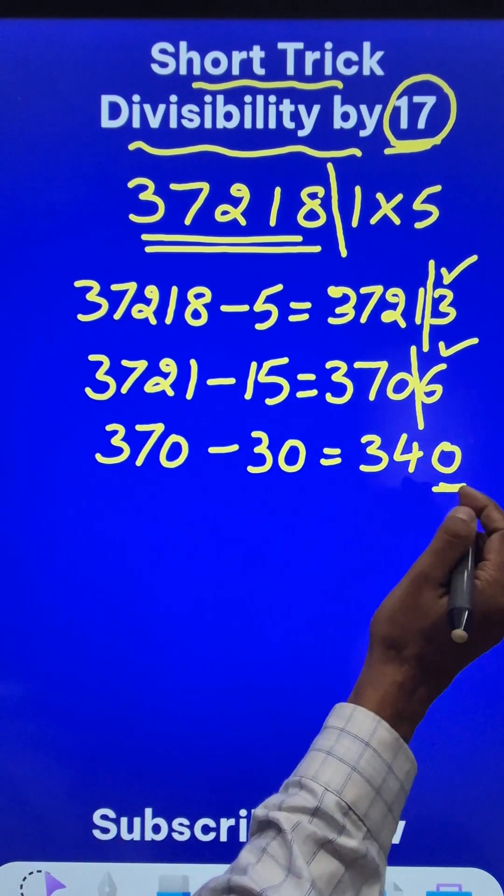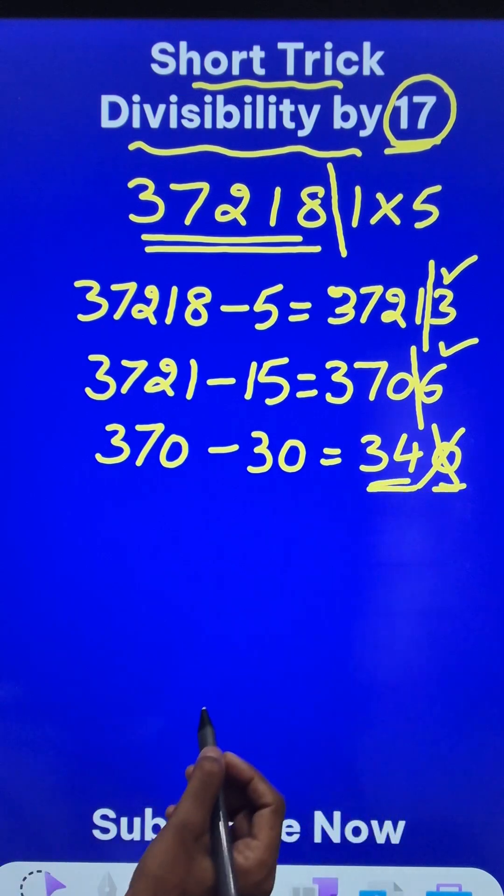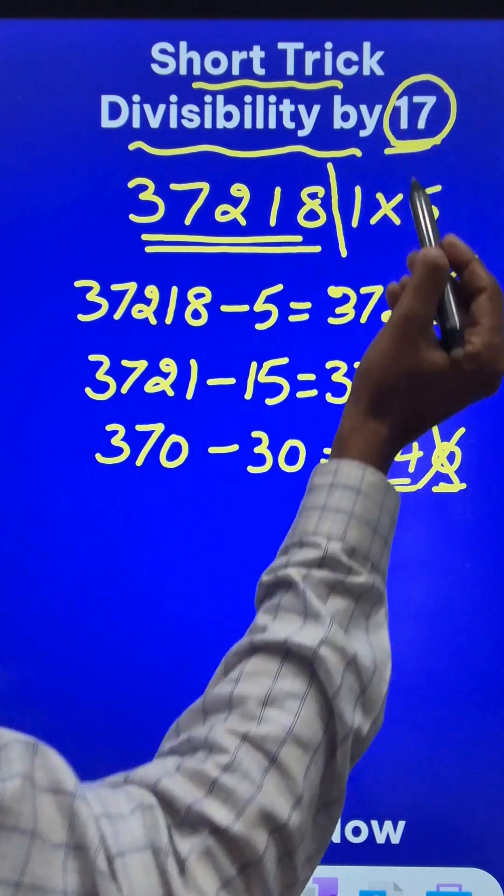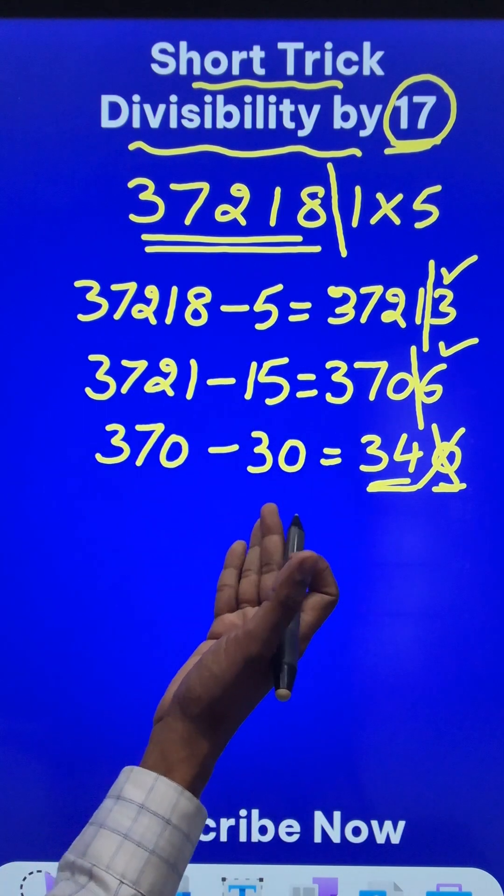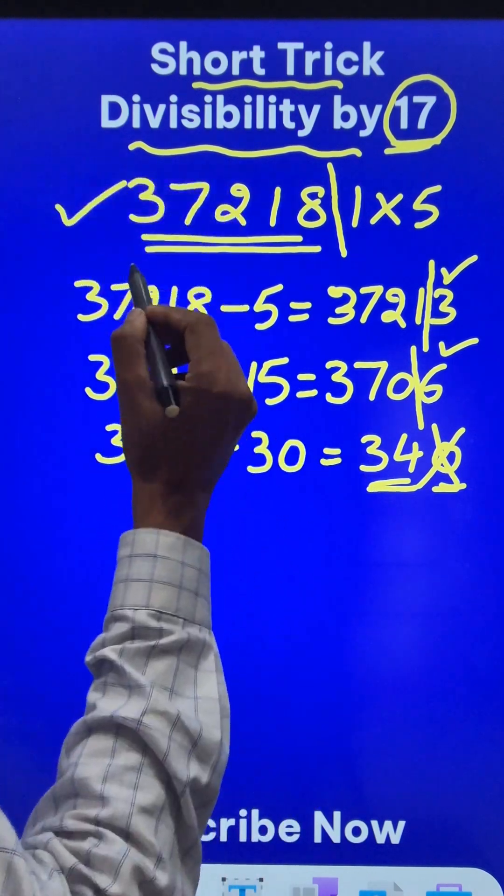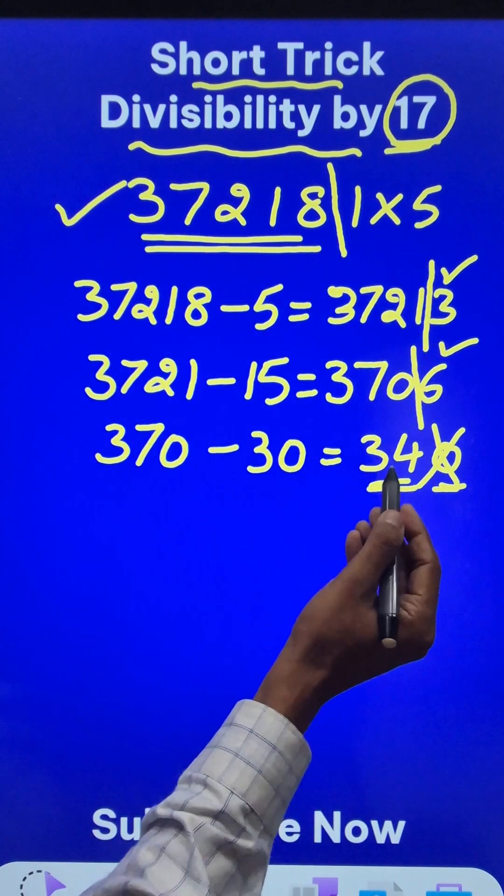If you get a 0 in the unit place, just cancel that, you get 34 and we all know 17 times 2 is 34. If even that is a problem, you can do it once more, you will get a multiple of 17. So the entire number is divisible by 17 because 34 is divisible by 17.